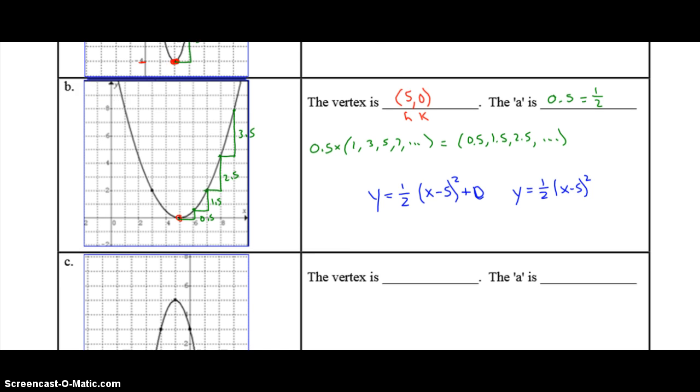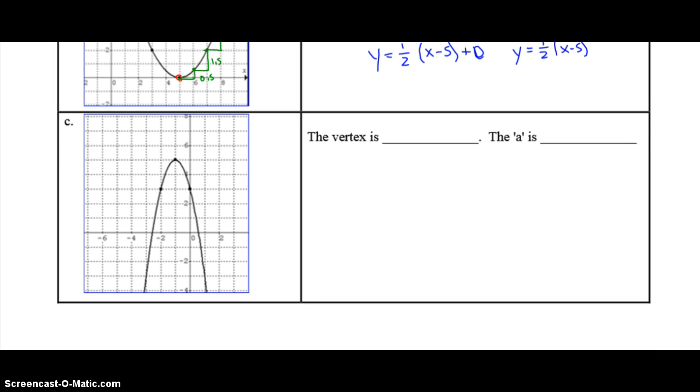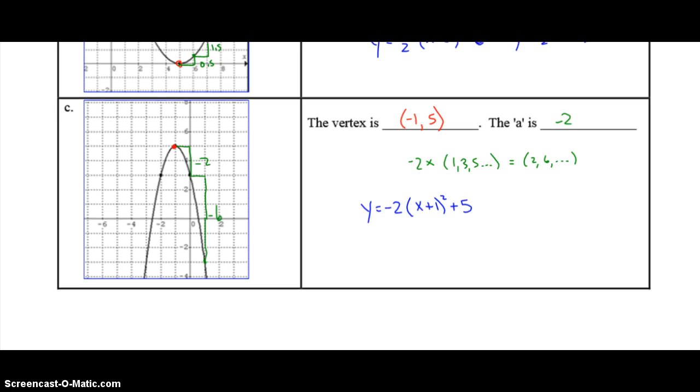So I'd like you to pause the video and try this example here. So pause now and check your answer after. Okay, welcome back. You want to check your answer here. Your vertex was at negative 1, 5.